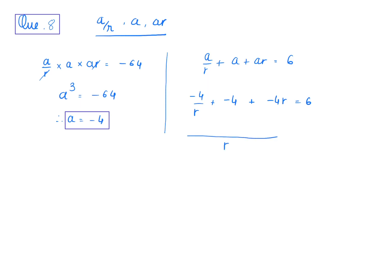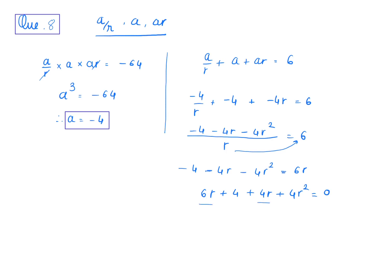We take the LCM, multiply r through, and rearrange. Moving all negative terms to the left side and changing signs, we arrive at the equation 4r² + 10r + 4 = 0.